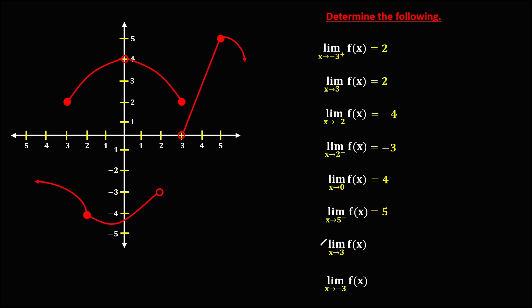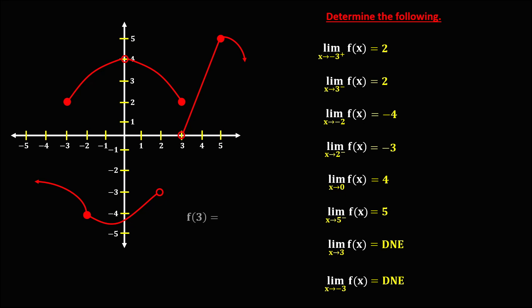Then for this limit, this is x equals positive 3. There are two coordinates: for this coordinate, there is no right side limit, and for this coordinate, there is no left side limit. Therefore, this limit does not exist. There is no right side limit and no left side limit.